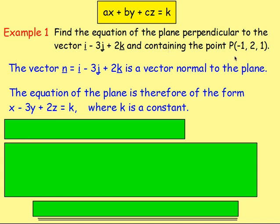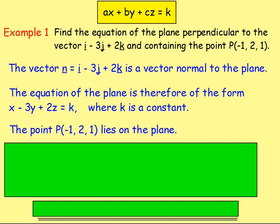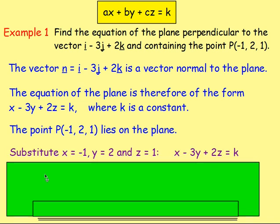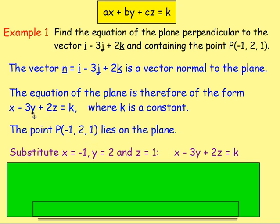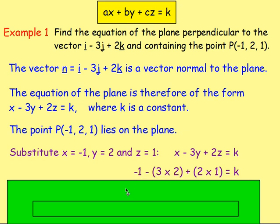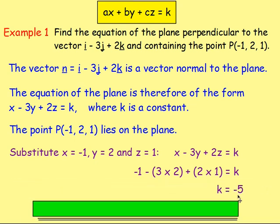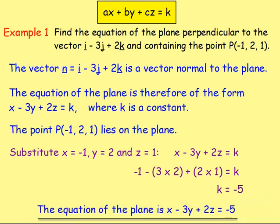We know the plane contains point P, which is negative 1, 2, and 1. Therefore we substitute x equals negative 1, y equals 2, and z equals 1 into the equation of the plane. That gives us negative 1 minus 3 times 2 plus 2 times 1, which gives k equals negative 5. So the equation of our plane is x minus 3y plus 2z equals negative 5.